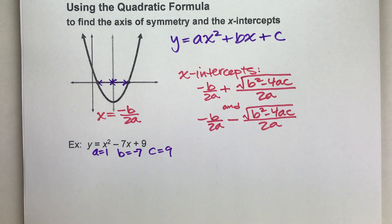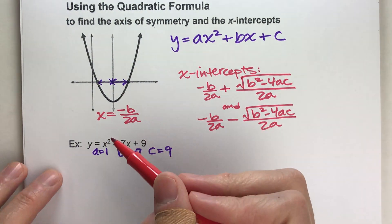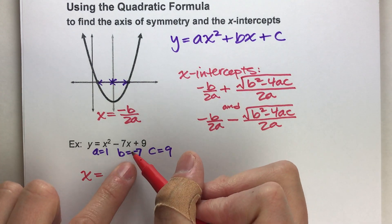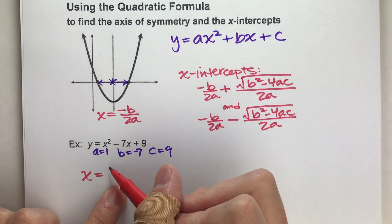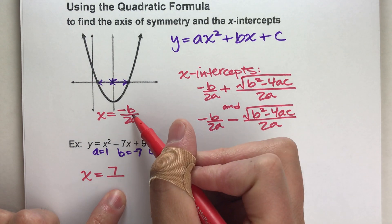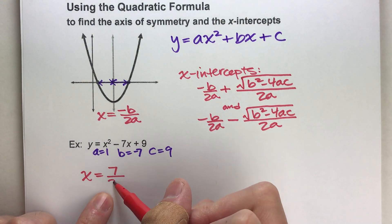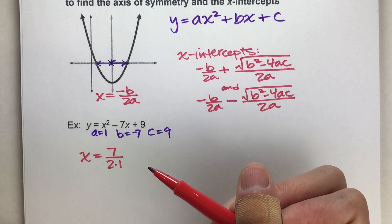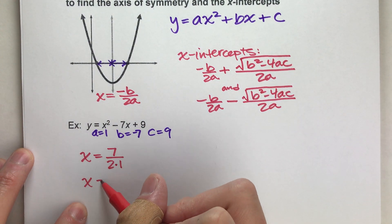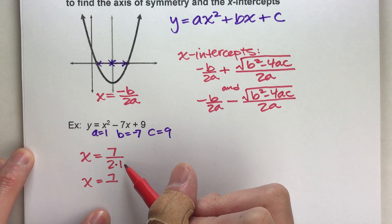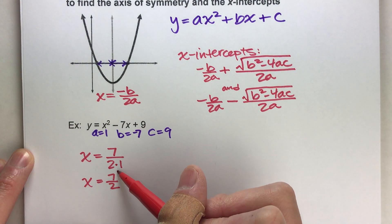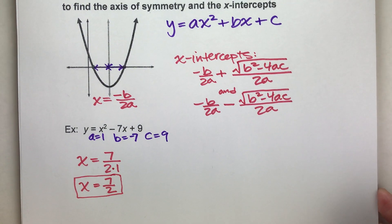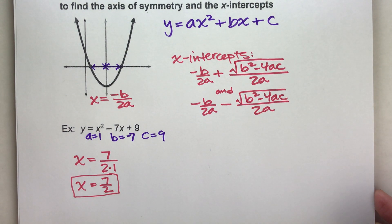To find the axis of symmetry, it's going to be x equals negative b. Well, b is negative 7, so the opposite of negative 7 is positive 7, divided by 2 times a. 2 times 1 is 2. So we get 7 over 2, which is 3 and a half. x equals 7 halves is the equation for our axis of symmetry.